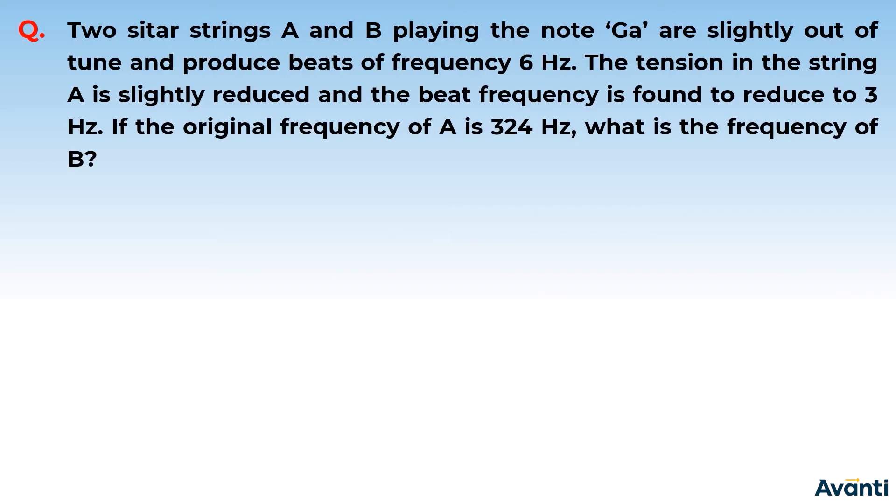Two sitar strings A and B playing the note GA are slightly out of tune and produce beats of frequency 6 Hz. The tension in string A is slightly reduced and the beat frequency is found to reduce to 3 Hz.